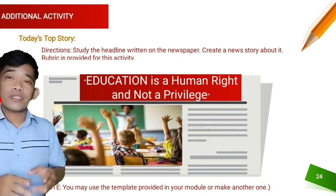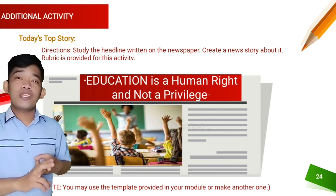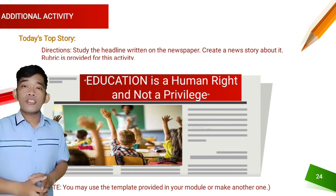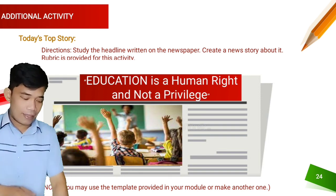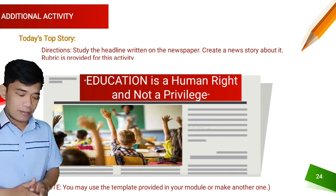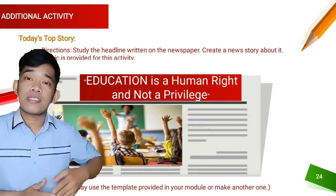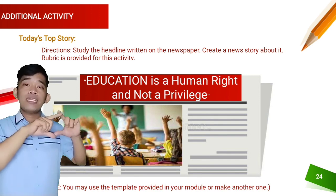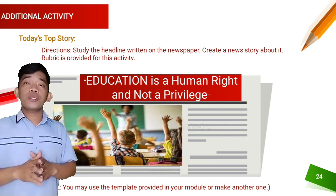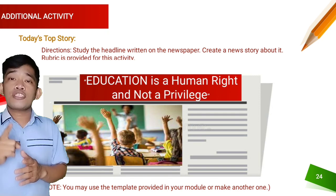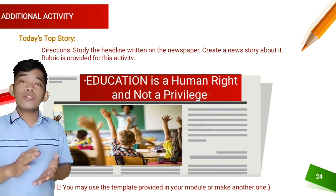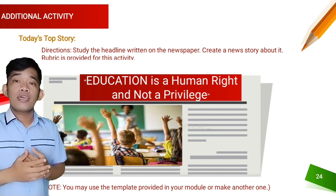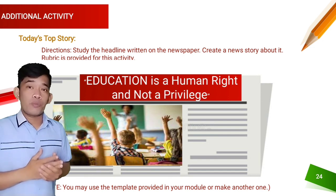Finally, we are done with the second to last activity. The next is the Additional Activity, which is to react to a newspaper headline entitled 'Education is a Human Right and Not a Privilege,' like what I said earlier — education is not a privilege but a human right. You are going to write a news story based on that headline. Go back to the lesson on newsletters in your English subject in order to answer this activity. A rubric is provided for this particular one.